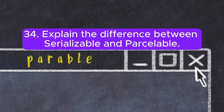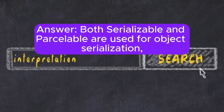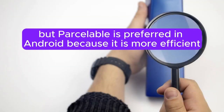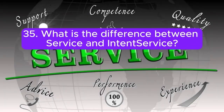Question 34: Explain the difference between Serializable and Parcelable. Both are used for object serialization, but Parcelable is preferred in Android because it is more efficient due to its use of a custom serialization mechanism that avoids reflection.